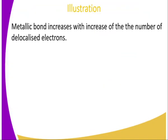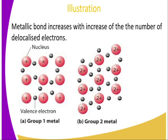Now let's have an illustration to help us understand metallic bonds. Metallic bond strength increases with an increase in the number of de-localized electrons. A metal from group one has one electron in each atom. A metal from group two has two electrons per atom. Therefore, we have an increased number of negative charges attracted by the positive nucleus, making the bond much stronger. For instance, aluminium has three electrons in each atom, making the bond very strong.